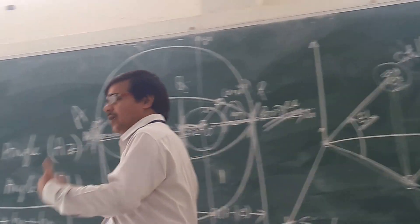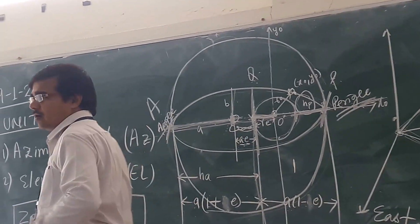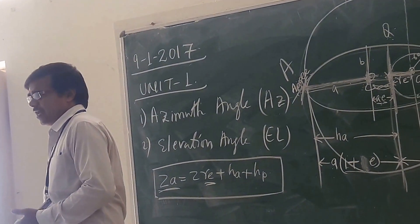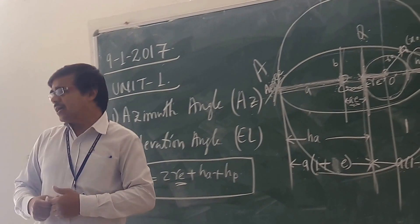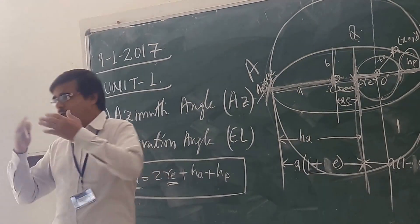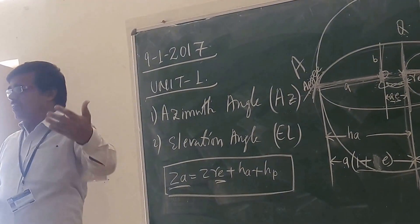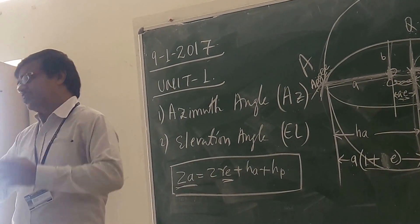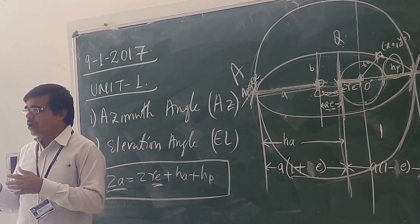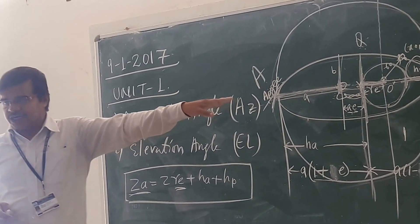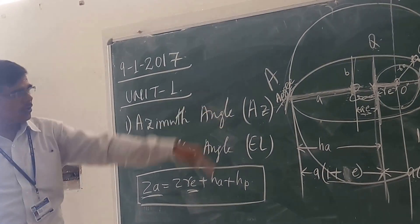If we are considering the Sun and Earth, some other constant will be there. If you are considering Jupiter and its satellite, some other constant applies. Our focus will be on Earth and satellite, so this constant will be used.